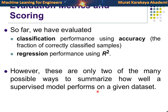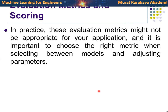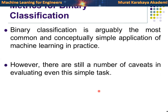Now we can talk about how to measure the success of trained models. We evaluate classification performance using accuracy — the fraction of correctly classified samples — and regression performance using R-squared: how much variance in the target can be explained by the features. Now we can extend these two metrics further, as in practice these evaluation metrics might not be appropriate for your application. It is important to choose the right metric when selecting between models and adjusting parameters. Binary classification is the most common in real life — simple but powerful.